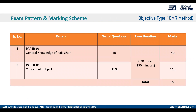For Paper A, general knowledge of Rajasthan will have 40 questions, and for Paper B, the planning part will consist of 110 questions. In total, there will be 150 questions for a time limit of 150 minutes, that is 2.5 hours, and marks will also be 150 — meaning one question carries one mark. The exam will be of an objective MCQ-based pattern.